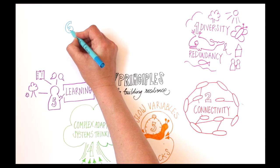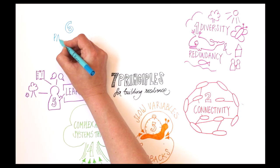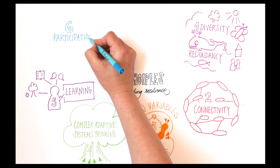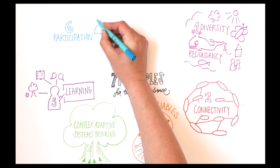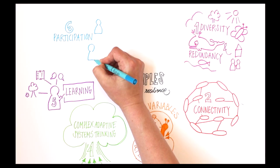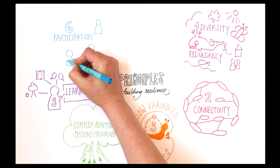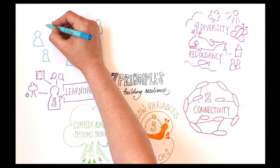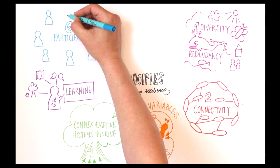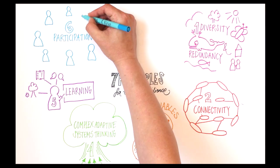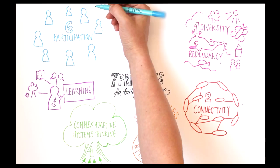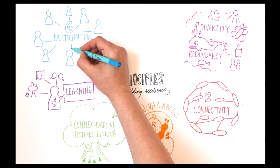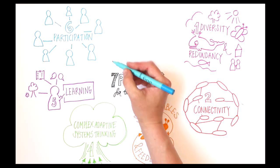Principle 6: Broaden participation. There are a range of advantages to broad and well-functioning participation. An informed and well-functioning group has the potential to build trust and a shared understanding, both fundamental ingredients for collective action.